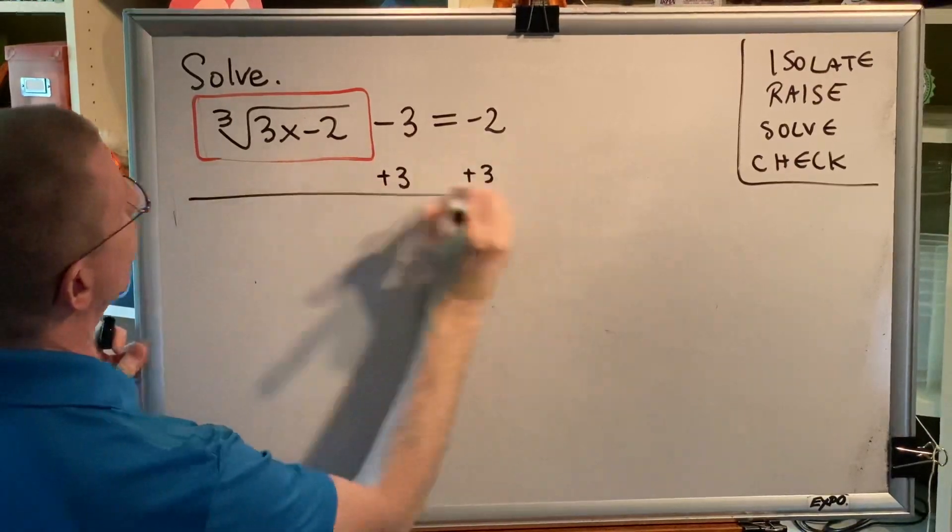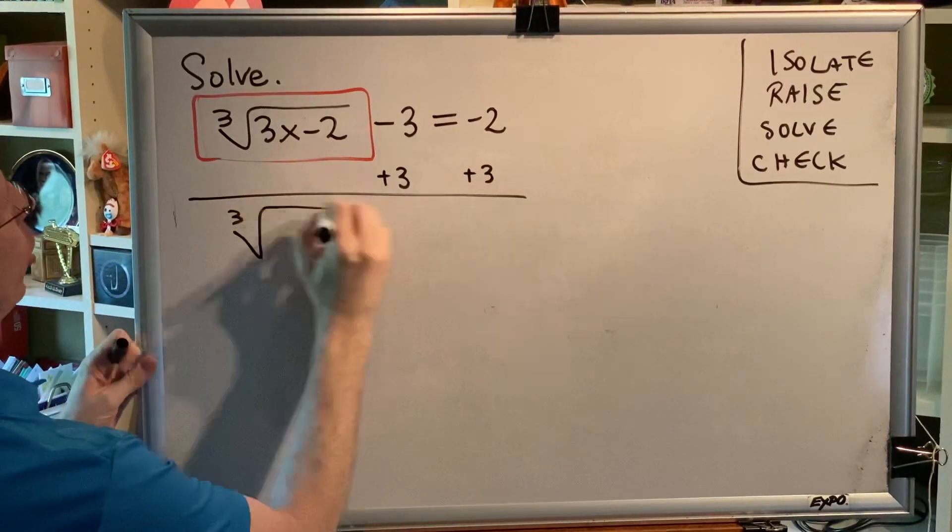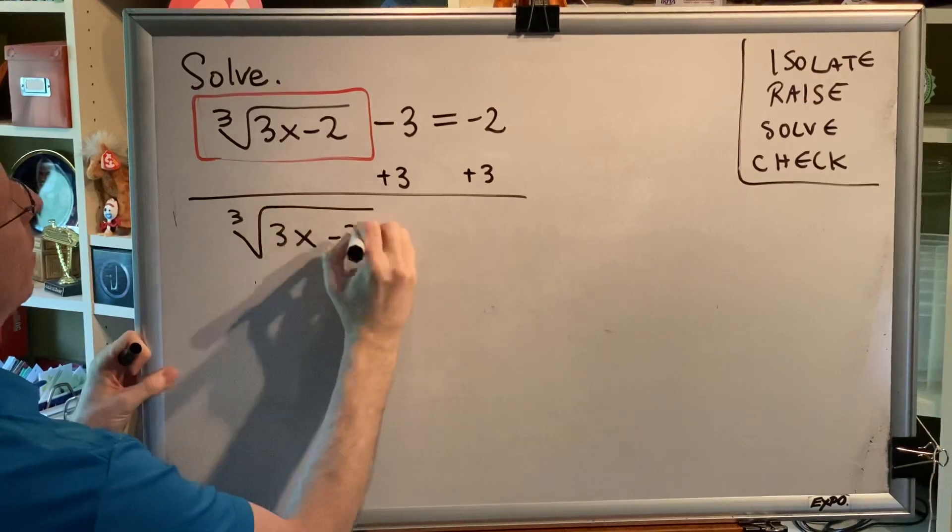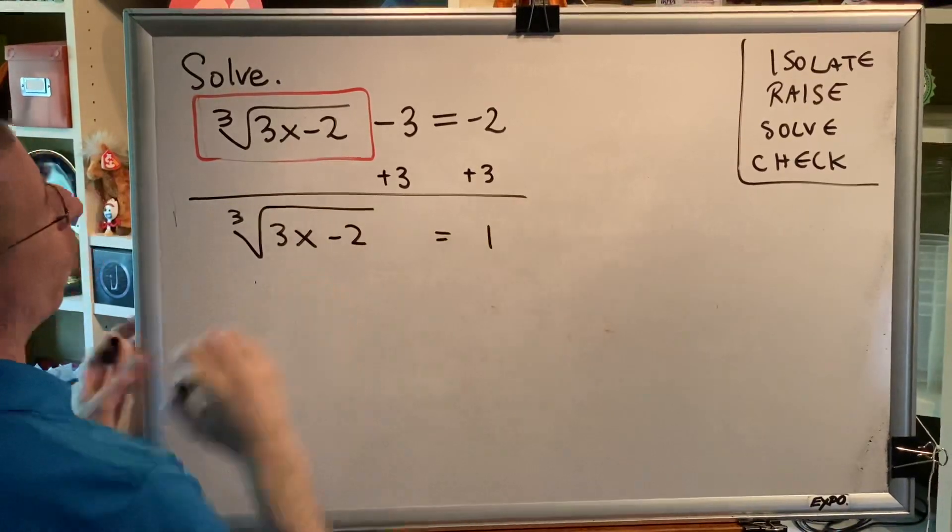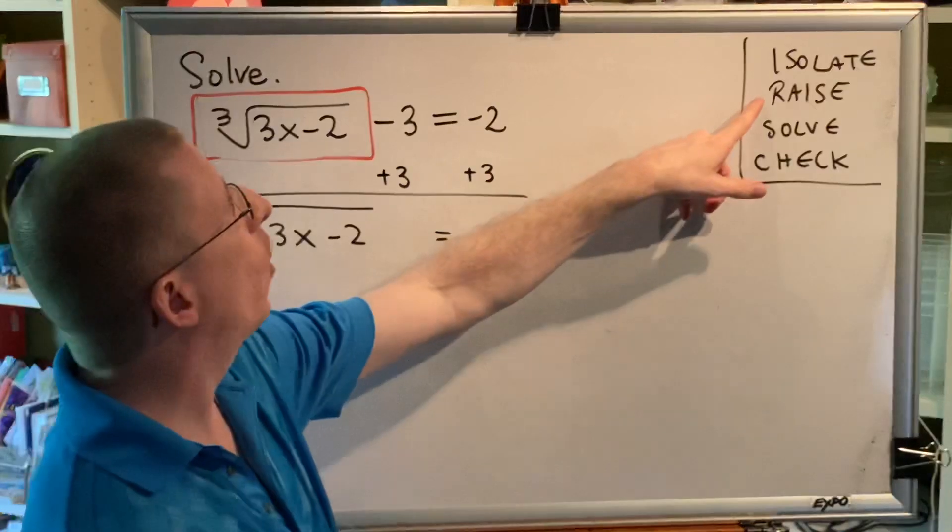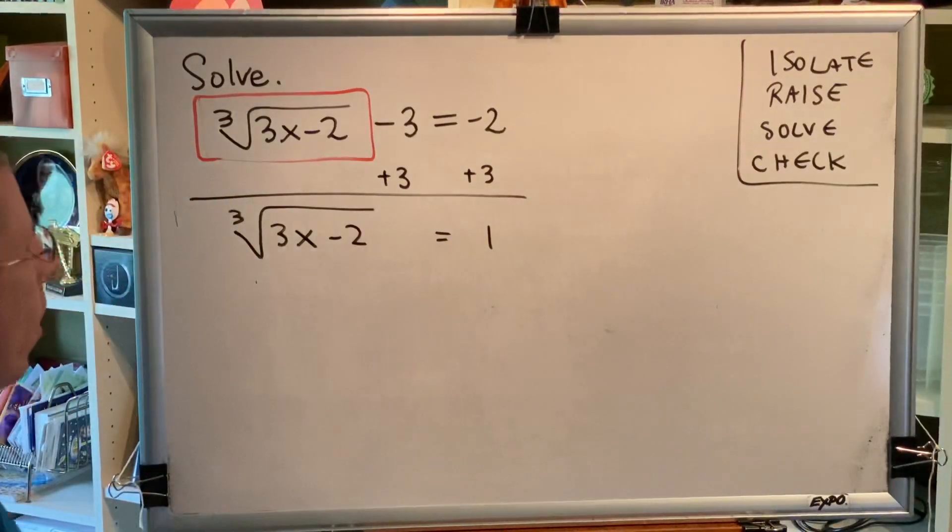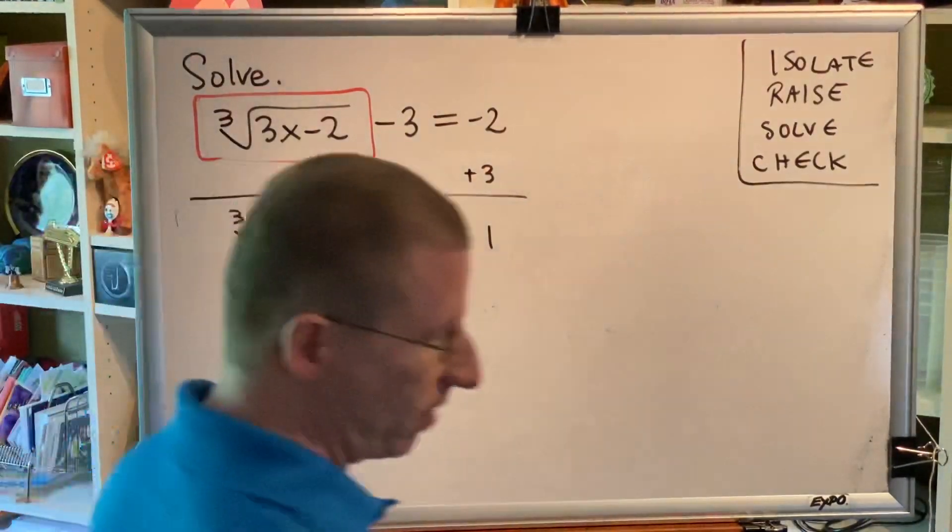We're going to add 3 to both sides of our equation. Then we have the cube root of the difference 3x minus 2 equals 1. The next step is to raise both sides of the equation to a power that matches the index of the isolated radical.